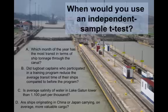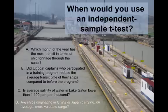Is average salinity of water at Lake Gatun lower than 1.100 part per thousand? Well, in this case you would usually just have one sample. So you don't need an independent sample t-test, you would run a one-sample t-test. And finally D, are ships originating in China or Japan carrying on average more valuable cargo? Well, here you could use an independent sample t-test. Look at a bunch of ships that are coming from China and the value of their cargo, and then look at a bunch of ships that are originating from Japan and look at the value of their cargo. And then look to see if the mean value of the value of their cargo is different between these two samples.